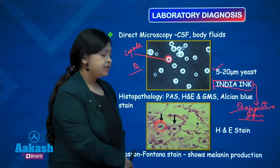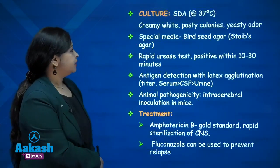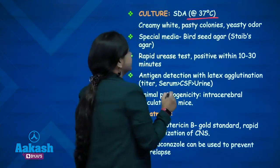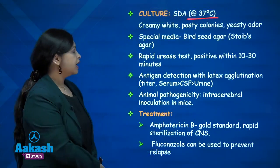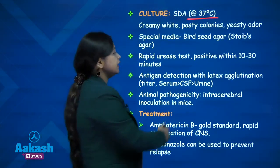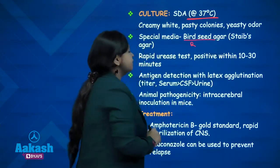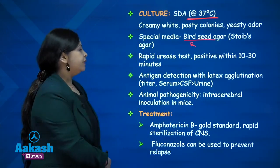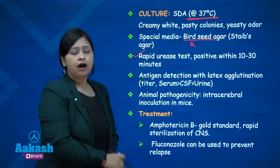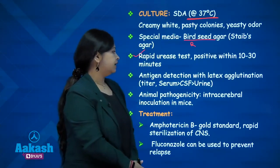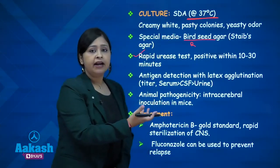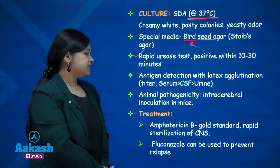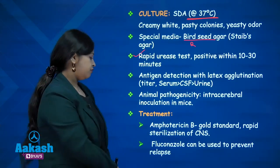Masson-Fontana stain is used for melanin production. Coming to culture: growth occurs at 37 degrees Celsius and produces creamy white pasty colonies. A special medium used for this fungus is bird seed agar or Staib's agar, particularly used for Cryptococcus. Rapid urease test produces results within 2 hours and can be used as an identification test. Antigen detection with latex agglutination and animal pathogenicity testing by intracerebral inoculation of mice can also be done.